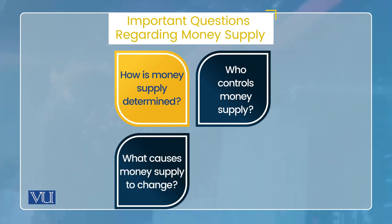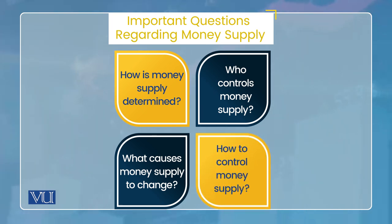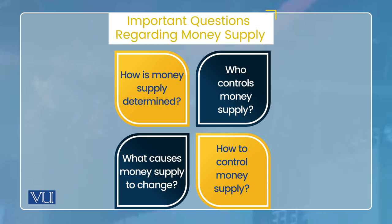What causes money supply to change? Money changes — from one date, one to three to six months later, it changes. Finally, how to control money supply? These are the key questions of the money supply process.